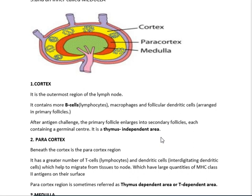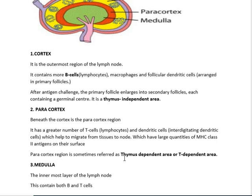The paracortex region lies beneath the cortex. It contains a great number of T cells or T lymphocytes, and also possesses dendritic cells called interdigitating dendritic cells, which help migrate from tissues to the nodes. The paracortex also has large quantities of MHC class 2 antigens on their surfaces. That is why we call this region the thymus-dependent area, whereas the cortex region is completely independent of T cells.